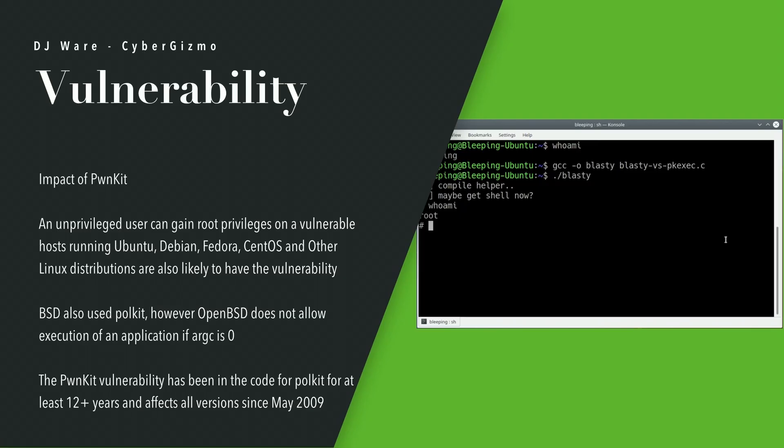This code problem has been in Polkit for a long time. They checked all the way back to versions from May 2009 and found the vulnerability there — so this is nothing new; it's been sitting in that code. Qualys says in their research they hadn't discovered any exploits in the wild until the announcement date. After the announcement on January 25th, the exploits blew through the roof.